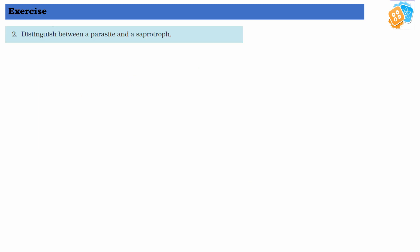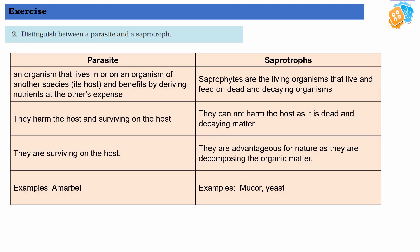This is how we frame our answer. Parasite: an organism that lives in or on an organism of another species, benefiting by deriving nutrients at the other's expense — that is known as a parasite. This is the definition of parasite. If a one-mark question is asked about what parasites are, you can write the same definition.